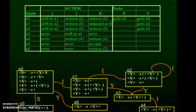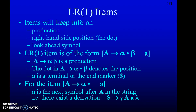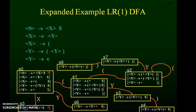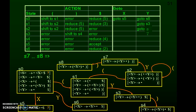The action and goto table lists all states from S0 to S6, with all terminal symbols in the action section and all non-terminals in the goto section. LR(1) represents reading the very first lookahead symbol from the input. This is expanded further to construct the DFA, with states from S0 to S8, and a corresponding action and goto table — the LR(1) parsing table.